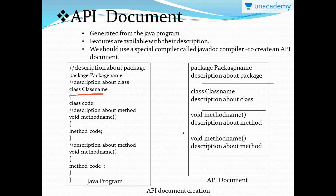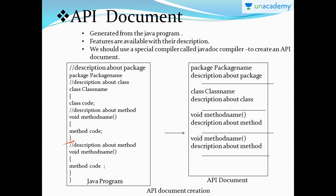A class and class name is mandatory for every Java program - until and unless you have at least one class you cannot write a Java program. We don't give the description of the class name in the Java program itself - for example if I'm adding numbers I give the class name as 'sum' but a description cannot be given in the Java program, whereas that can be done in the API document. A method - which is called a function in C or C++ - is called a method throughout Java.